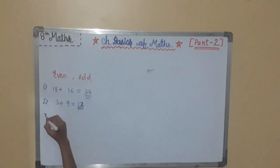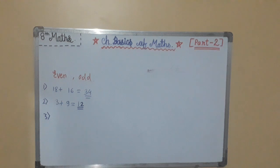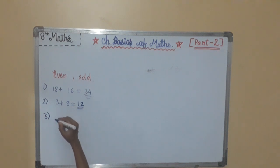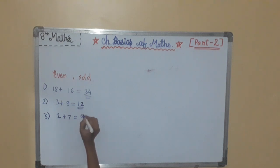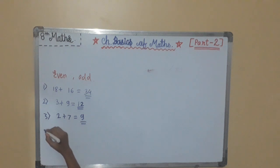Property 3: the sum of an even number and an odd number is odd. For example, even number 2 plus odd number 7 equals 9, and 9 is an odd number. So this property is also true.